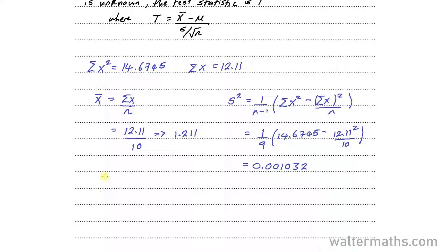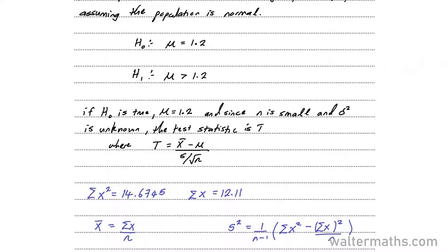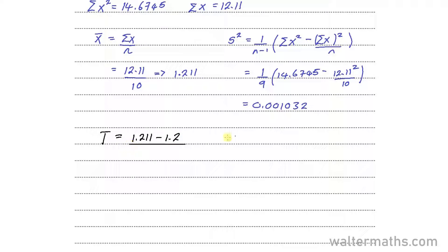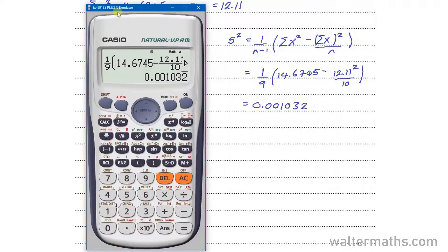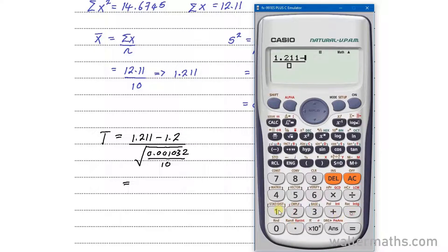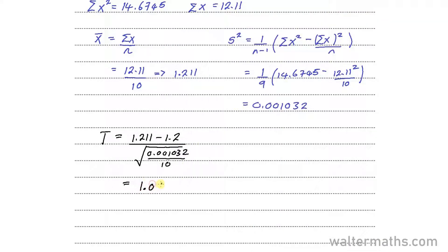We can now calculate the test statistic T. T is equal to x̄, which is the sample mean, which happens to be 1.211, minus μ, which happens to be 1.2, and that's over s/√n, which is the square root of 0.001032 over n, which is 10. This is the test statistic T here. That's 1.211 minus 1.2 over the square root of 0.001032 over 10, and this gives us 1.08 to 3 significant figures.